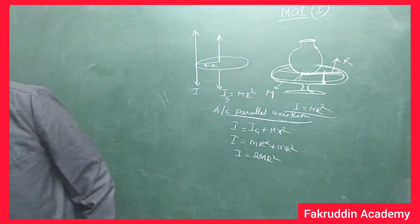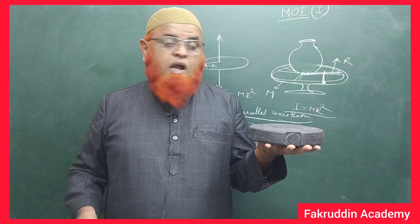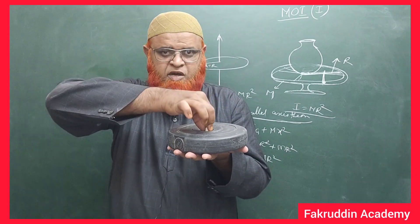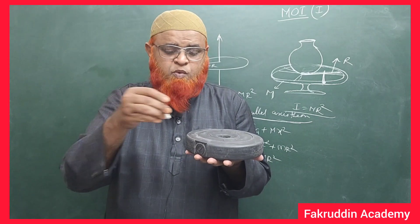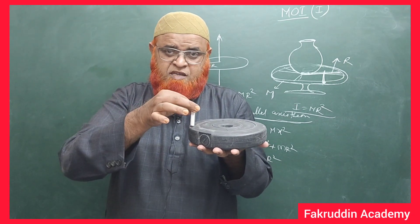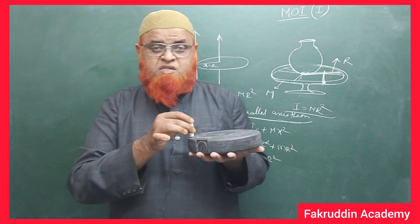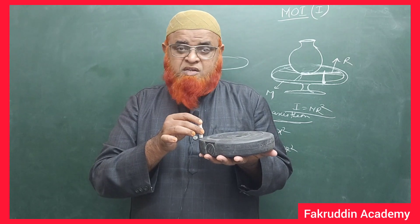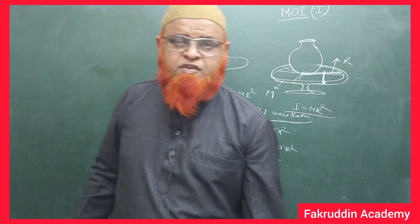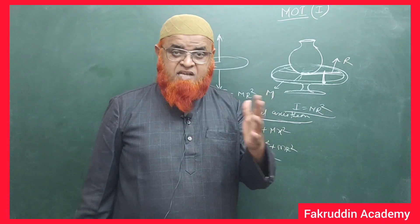Let me take a small example. Consider this wheel as a ring. With respect to the axis passing through the center, moment of inertia is mr². With respect to the axis at the edge of the ring, it is 2mr². But if you want to find out the moment of inertia with respect to the diameter, we need to understand the perpendicular axis theorem.